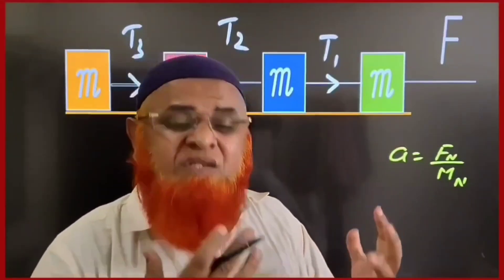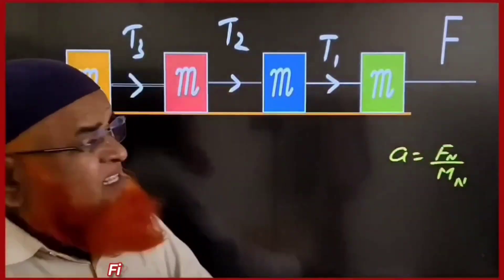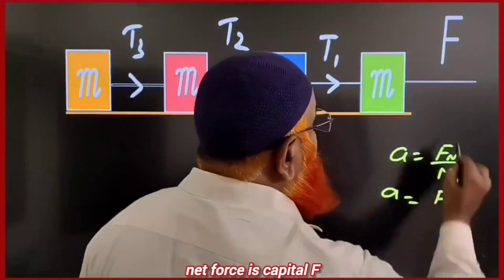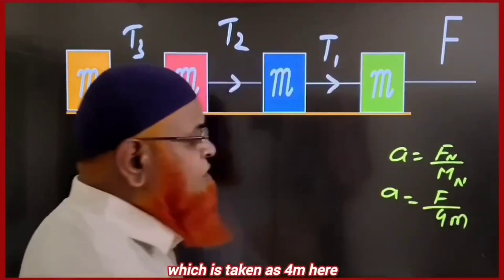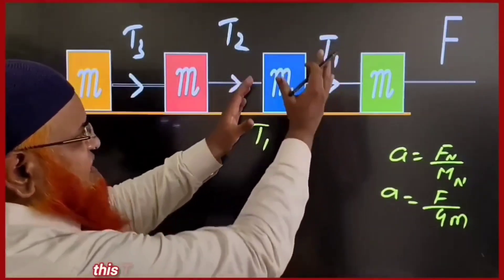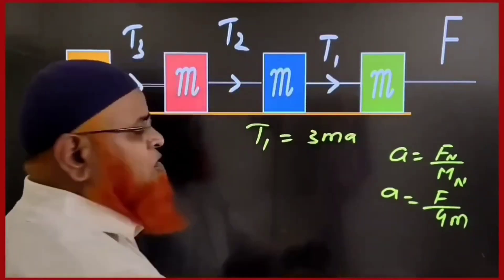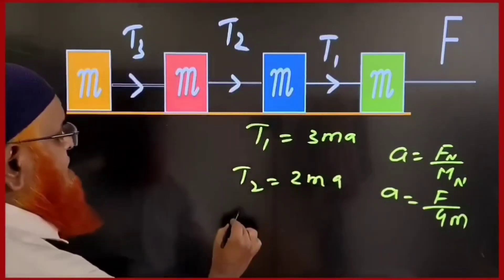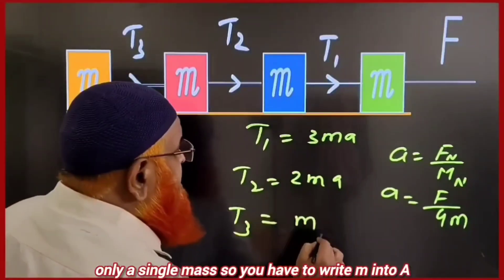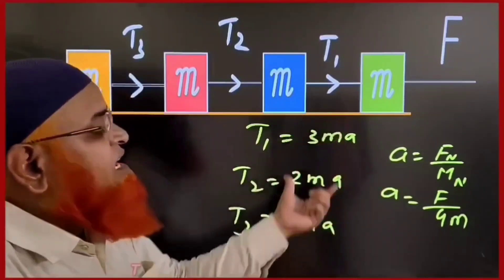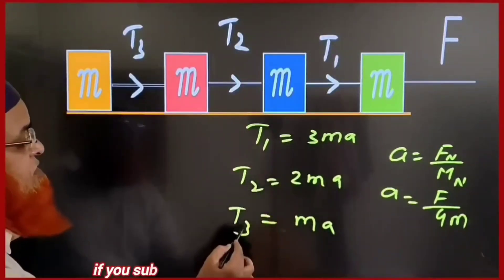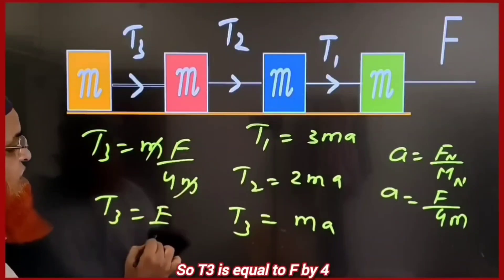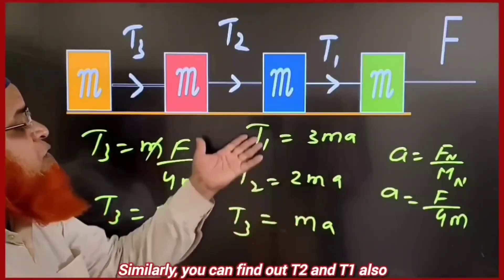How can you solve complex block systems in a super simple way? First find the common acceleration for all blocks: net force F divided by net mass 4m. To find tension T1, it pulls 3 masses: T1 equals 3m into a. T2 pulls 2 masses: T2 equals 2m into a. T3 pulls a single mass: T3 equals m into a. Substituting a equals F/4m, T3 equals F/4. Similarly you can find T2 and T1.